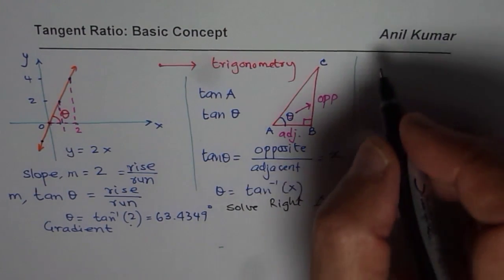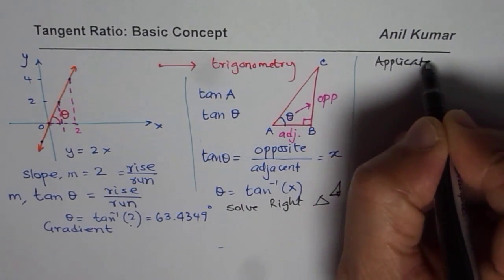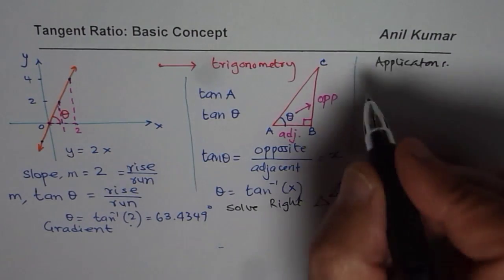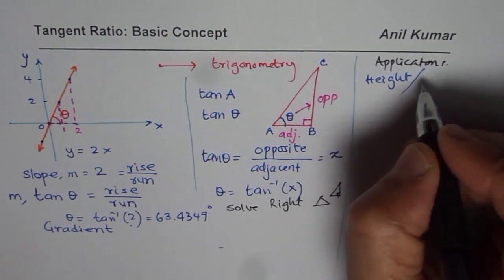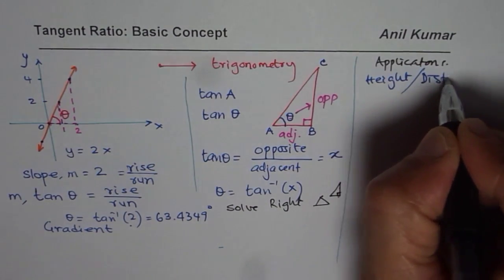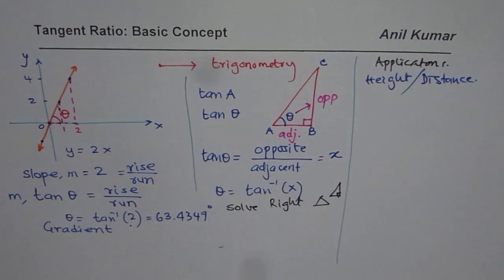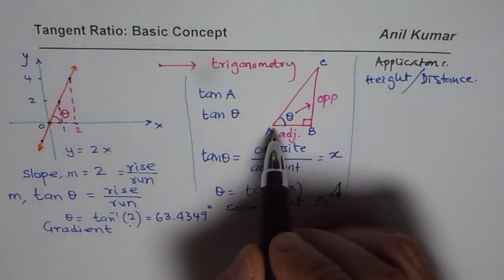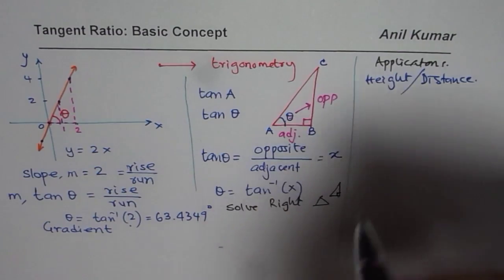And after that, we will take a few examples, which will be kind of applications. Now, in applications, we have questions, which are kind of height and distance. So whenever you have height and distance problems, you can always apply tan theta in this knowledge, and solve those problems. Height and distance. You can consider this to be the height, and that to be the distance, then you know the angle.